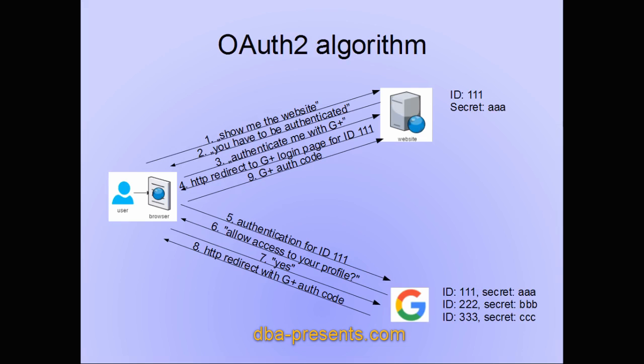The authorization code allows the relying party to ask Google for an access token. In turn, the access token can be used to request user data from Google. Google validates the token and the data scope agreed by the user and provides the relying party with requested data. Now, the relying party website knows the user identity and can allow him or her to go in. This is how OAuth2 works in a typical case.